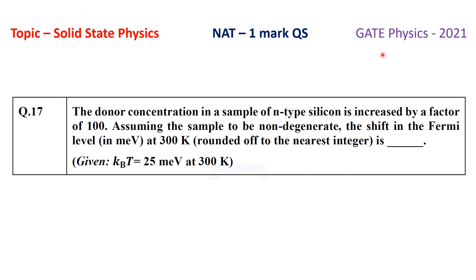This question was asked in the GATE 2021 paper — it is a numerical answer type, one-mark question. The topic is solid state physics, specifically semiconductor physics. The question is: the donor concentration in a sample of n-type silicon is increased by a factor of 100. Assuming the sample to be non-degenerate, the shift in the Fermi level in milli electron volt at 300 Kelvin, rounded off to the nearest integer, is — given that kBT equals 25 milli electron volt at 300 Kelvin.